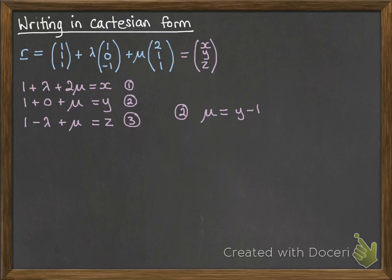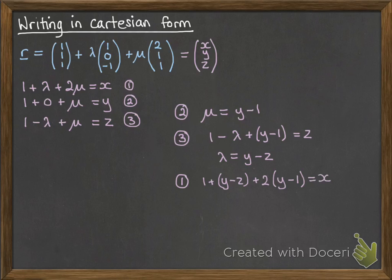we get that mu equals y minus one. Equation three, we can then substitute that in, so that lambda is y minus z, and then use that to substitute into equation number one. And there we've been able to get rid of both the lambda and the mu and have an equation that's all in x, y, z, so it's in Cartesian form.